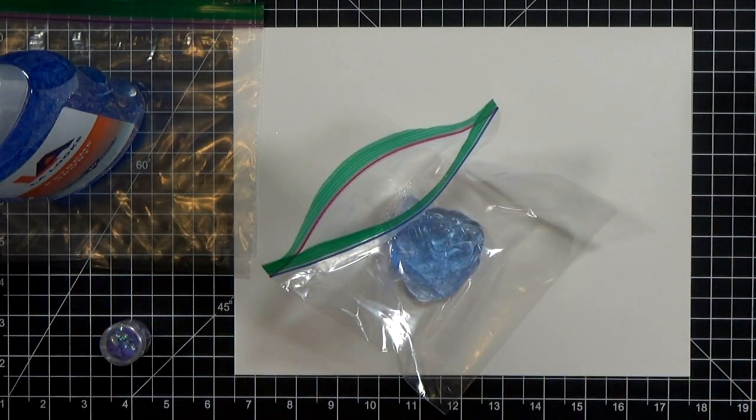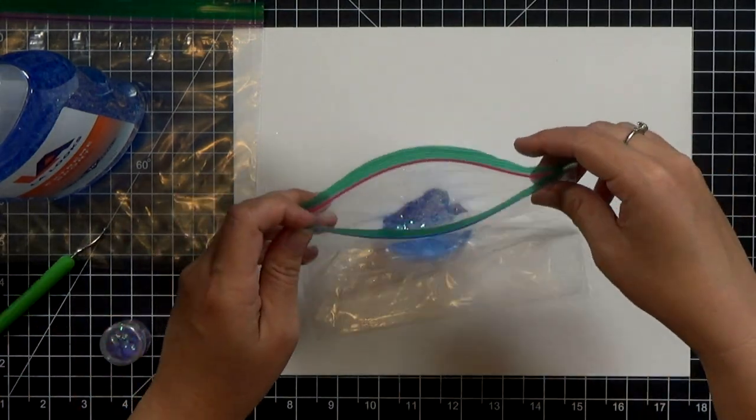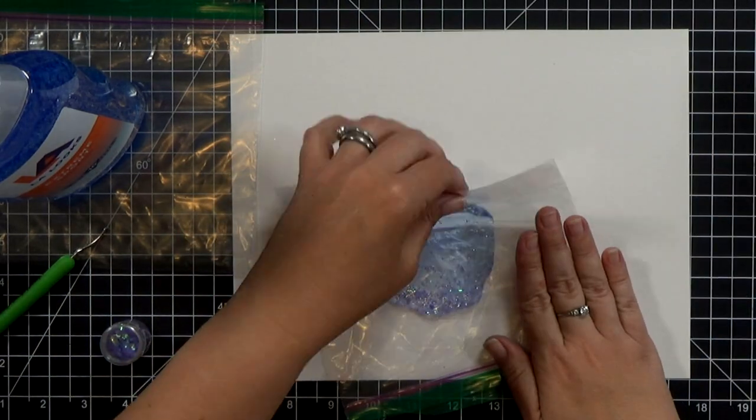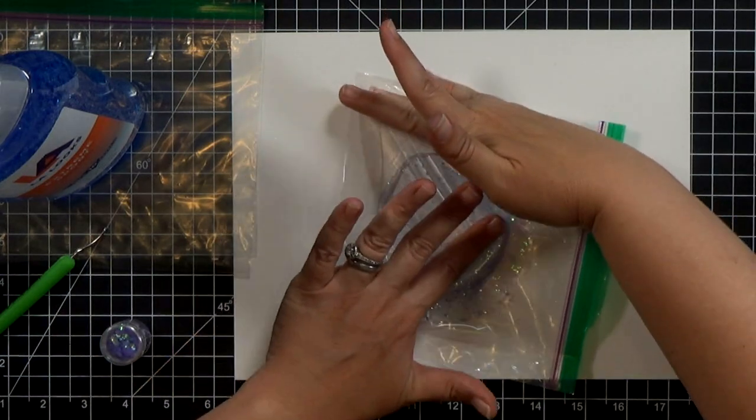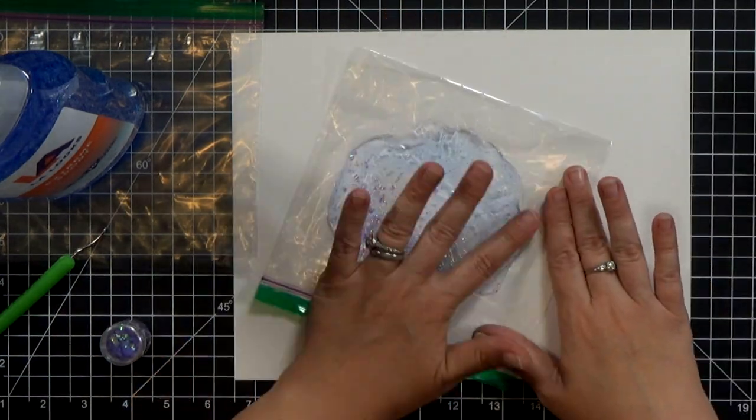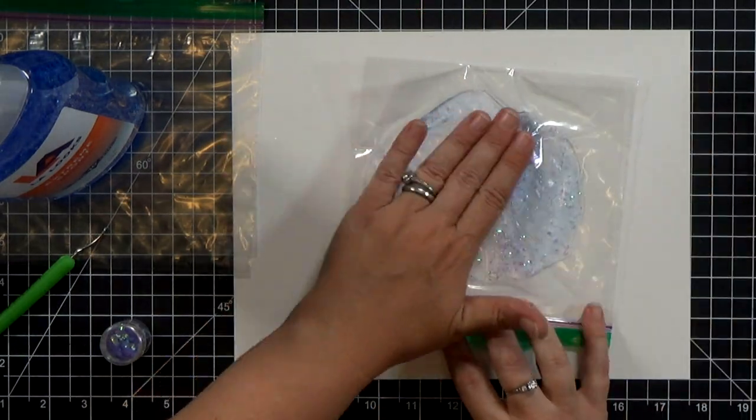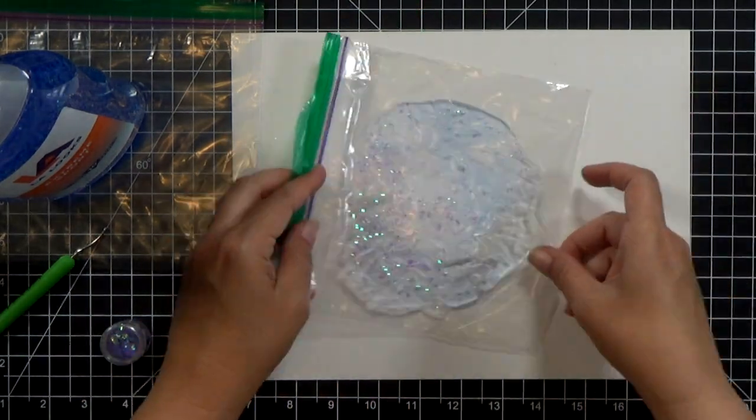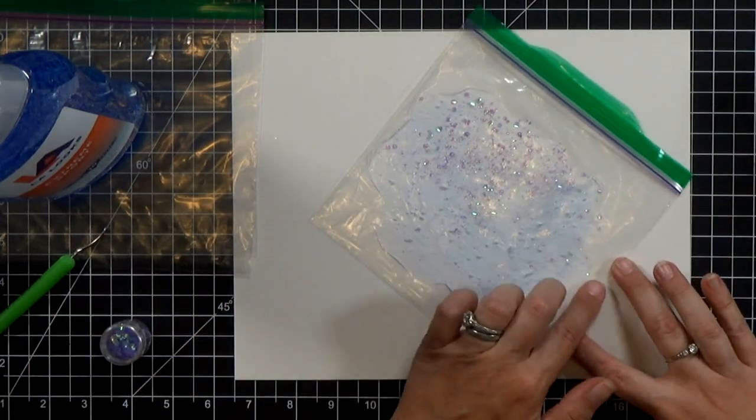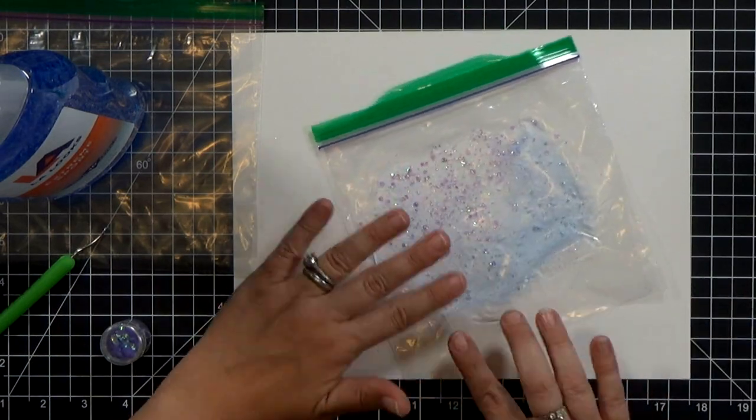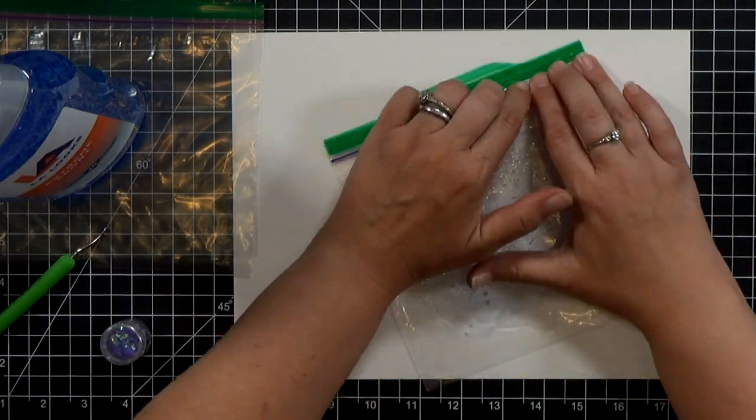So for my first one I've got about two tablespoons of hair gel into my sandwich bag and then I scooped in some of the chunky, that's a chunky transparent glitter there, and then also a little bit of a really fine iridescent glitter. And notice that I am just moving it around and mixing it in that bag but I am not trying to scrunch that bag up at all. I don't want to add wrinkles and I definitely don't want to add any little tiny tears or holes into the bag.